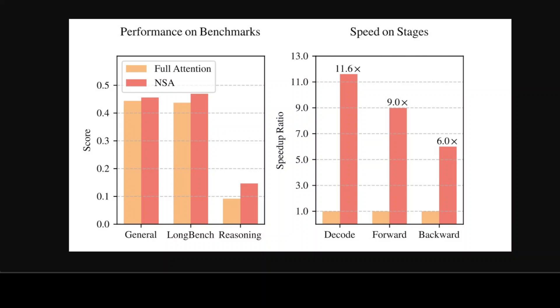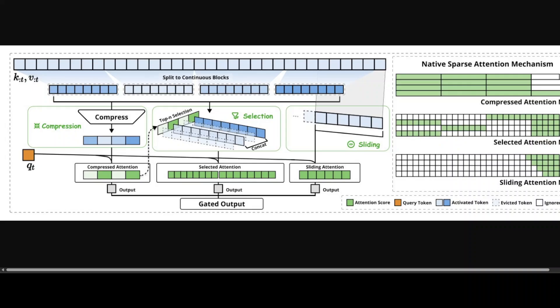Then we have hardware alignment — NSA is optimized for modern hardware to ensure that theoretical computational savings translate into real-world speed improvements, using efficient designs that work well with hardware to avoid bottlenecks. We also have training efficiency: NSA facilitates end-to-end training which reduces the burden during model training while preserving or enhancing performance, which is crucial for real-world applications where both fast inference and efficient training are needed.